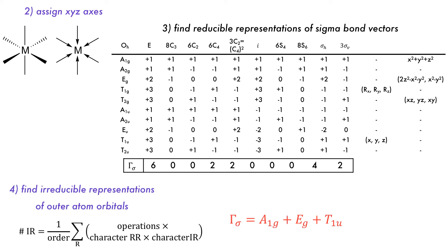Then it is reduced to give the irreducible representations using the equation, giving an a1g, an eg and a t1u set with six different group orbitals, as a1g is singly degenerate, eg is doubly degenerate, and t1u is triply degenerate.